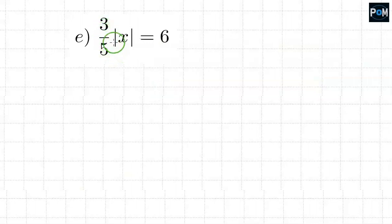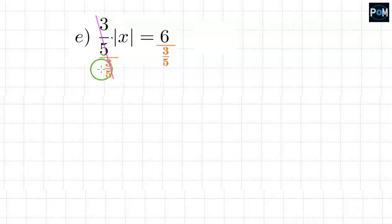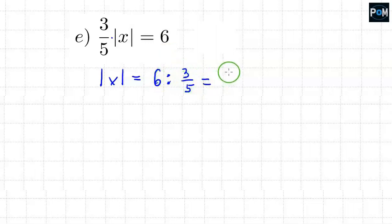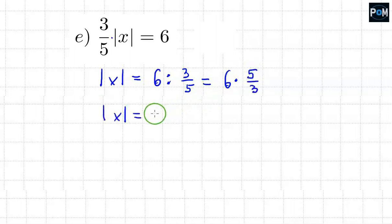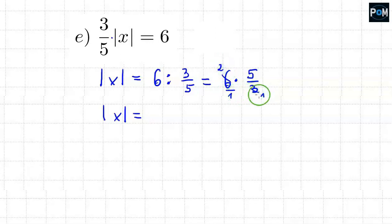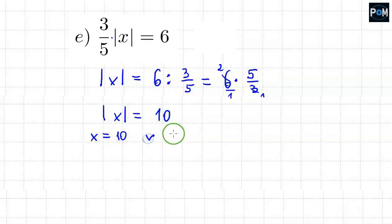Back to typical examples — here there's a fraction. Here is multiplication, and we want to get rid of what's outside the absolute value, so we don't want these 3 fifths here. We divide everything by 3 fifths, causing these 3 fifths to disappear, leaving us with the absolute value of x equal to 6 divided by 3 fifths. We change division to multiplication by the reciprocal, that is times 5 thirds. Then 6 and 3 are reduced: 6 divided by 3 is 2, and 2 times 5 equals 10. So the absolute value of x equals 10, meaning x can be equal to 10, or x can be equal to negative 10.